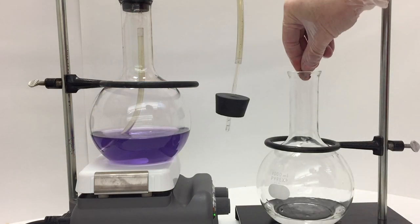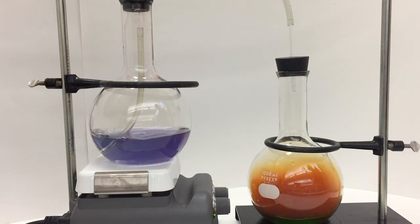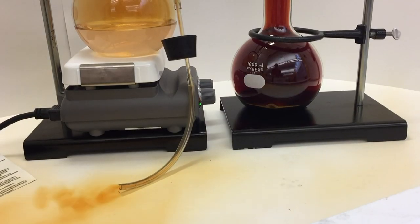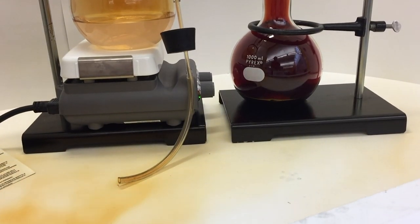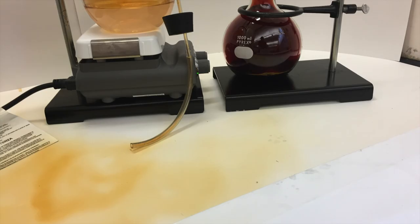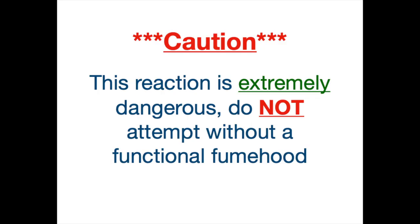Let's watch that reaction again at four times the regular speed. Reminder, this is a very dangerous reaction. Without a fume hood, this is what you can expect: that brown gas spewing out into your lab and forming nitric acid in your lungs. Please do not attempt this experiment without a good functional fume hood.